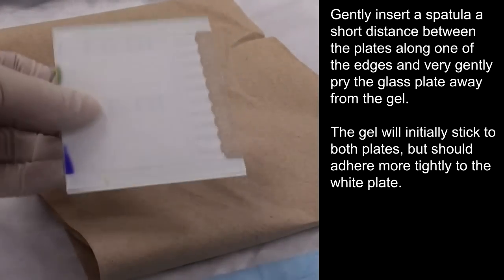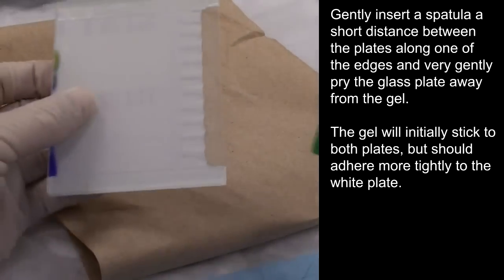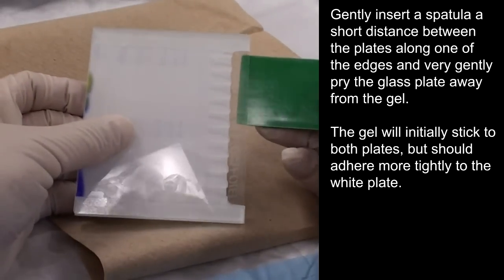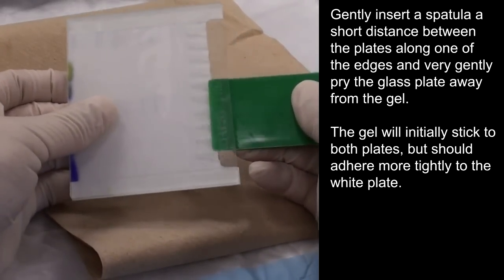Gently insert a spatula a short distance between the plates along one of the edges and very gently pry the glass plate away from the gel. The gel will initially stick to both plates but should adhere more tightly to the white plate.